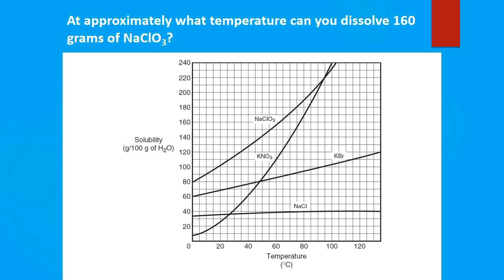In this question we're asked: at approximately what temperature can you dissolve 160 grams of sodium chloride in 100 grams of water? Now we're given grams and need to find temperature, so we're going to start on our y-axis this time — on our solubility axis — because we know how much we want to dissolve. We identify the sodium chloride curve, start on our y-axis at 160, go across until we meet our curve, then go down to get our desired temperature on the x-axis. That temperature is approximately 63 degrees Celsius.